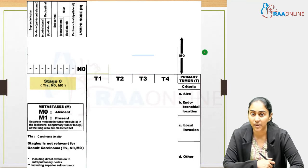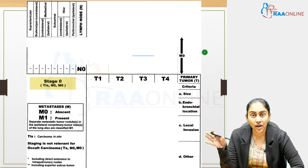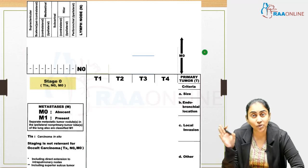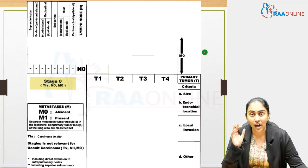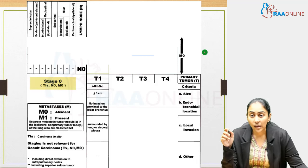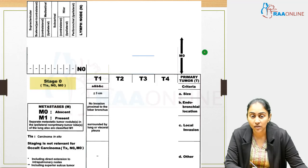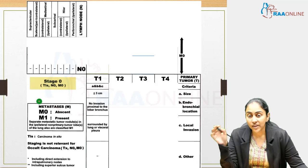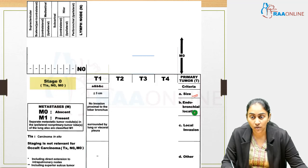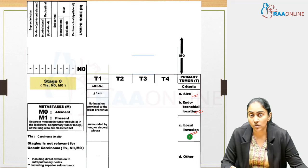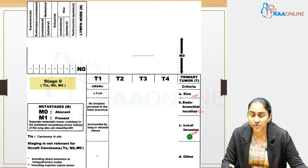For lung malignancy staging, the TNM classification is used. T describes tumour characteristics, N describes nodes, M describes metastases. T1: small tumour less than 3 cm, surrounded by lung or visceral pleura, no invasion proximal to the lobar bronchus — T1N0 is Stage 1a. T2: tumour more than 3 cm, may involve the main bronchus at least 2 cm from the carina, with visceral pleural involvement or segmental atelectasis — T2N0 is Stage 1b.